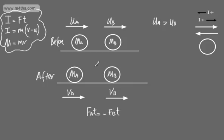The force that A exerts on B will be equal and opposite to the force that B exerts on A, such that we can write FA is equal to minus FB. These are equal and opposite forces acting for T seconds. So we can simply write that FA multiplied by T will be equal to minus FB multiplied by T, as they are in contact for the same amount of time.